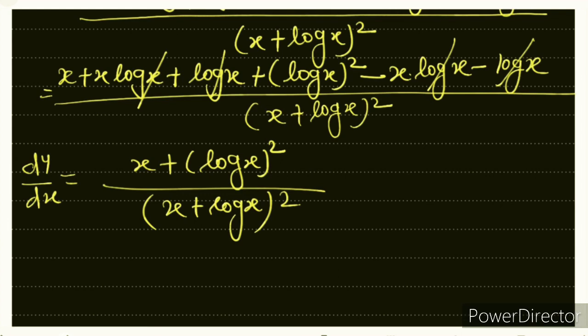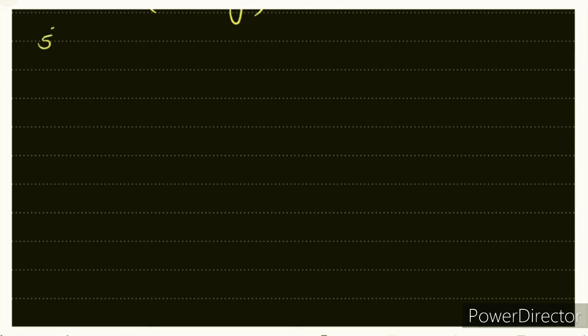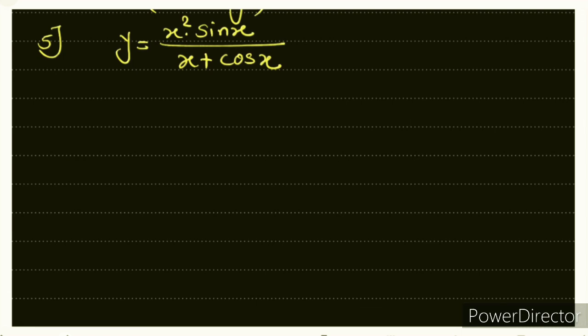Now sum number 5: y = (x²·sin x) / (x + cos x). Please pause the video and try to solve it yourself.